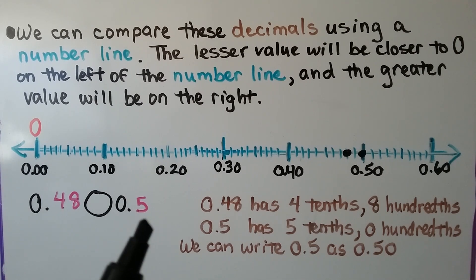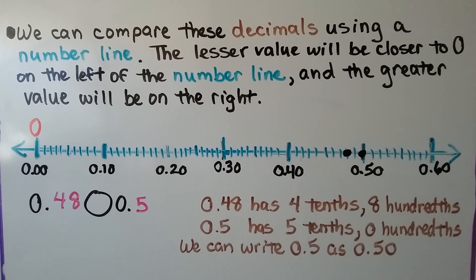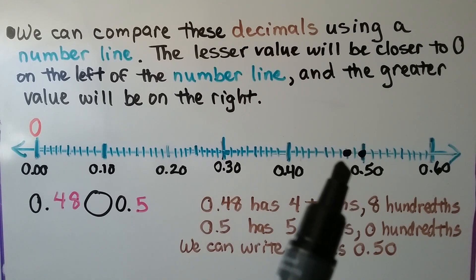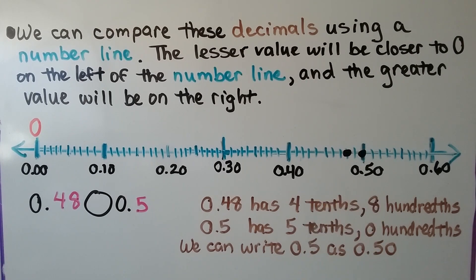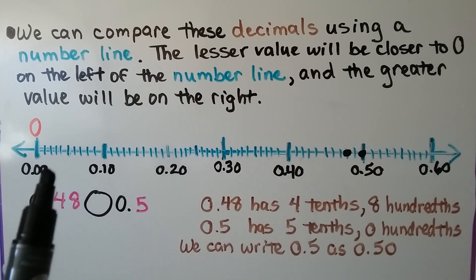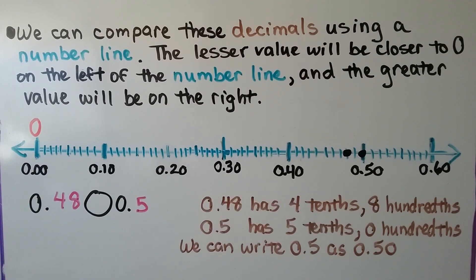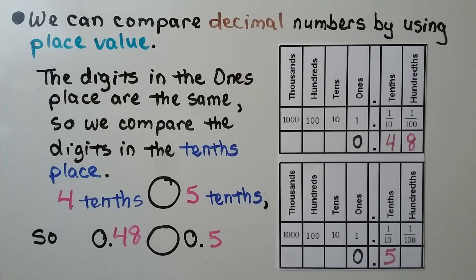Five tenths has a five in the tenths place and zero hundredths, and we can write five tenths as fifty hundredths. Here's forty-eight hundredths on our number line, and here's fifty hundredths. We can see that forty-eight hundredths is closer to zero on the left, so it's less.